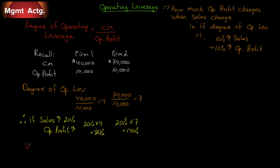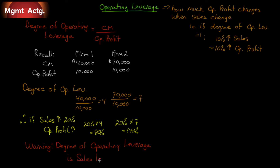Here's the problem with operating leverage: the degree of operating leverage is sales-specific. That means if we start at a different level of sales, we'll get a different degree of operating leverage. Here, Firm 1 and Firm 2 both had $100,000 in sales. If they had $200,000 in sales, they'd have different profit and different contribution margin, and the calculation would not divide through to the same thing.